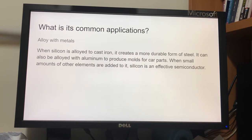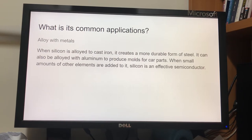Another common application is alloying with metals. When silicon is alloyed to cast iron, it creates a more durable form of steel. It can also be alloyed with aluminium to produce molds for car parts. When small amounts of other elements are added to it, silicon is an effective semiconductor.